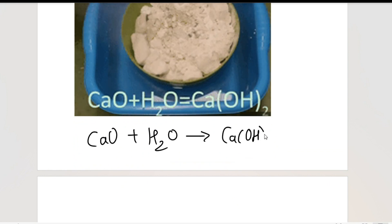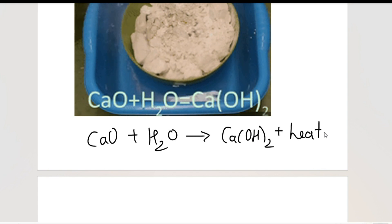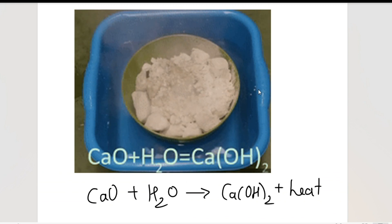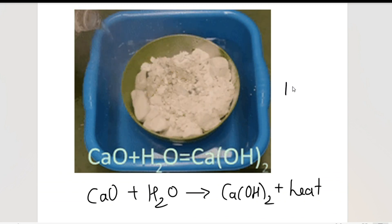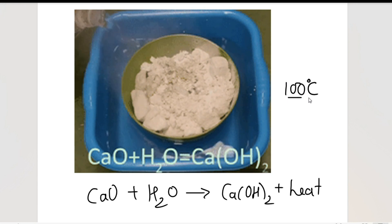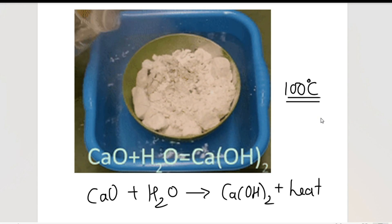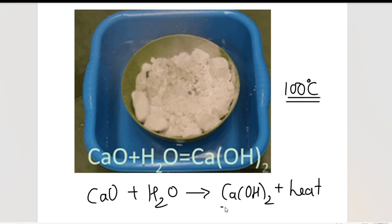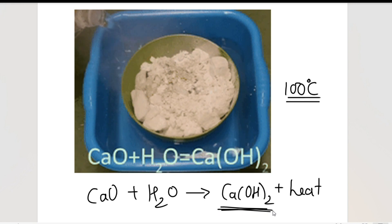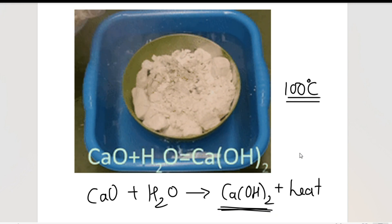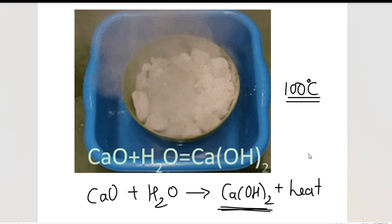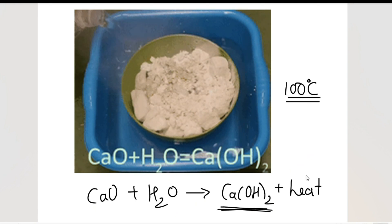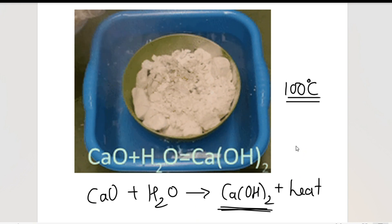When this reaction happens, calcium hydroxide is formed. Not only that, a large amount of heat energy is released — so much heat that the water outside starts boiling. We know water boils at 100 degrees Celsius, meaning that much heat is released. This is an example of a combination reaction because you get only a single product from two reactants.